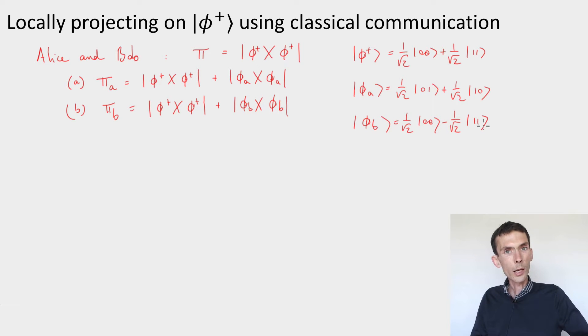And I claim that each of these two tests was equivalent to measuring for test A in the computational basis and checking agreement of outcomes, and for test B in the Hadamard basis and checking agreement of outcomes. Let's see why.